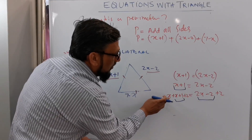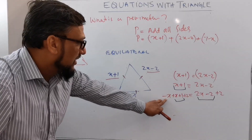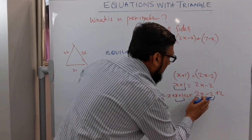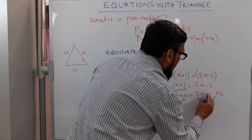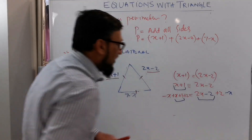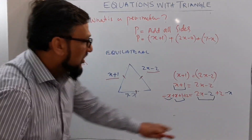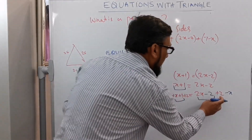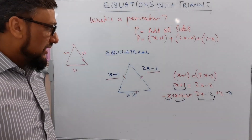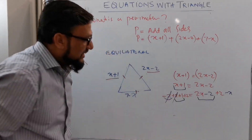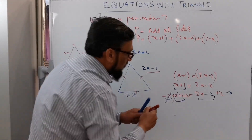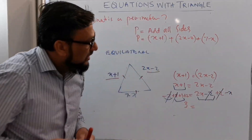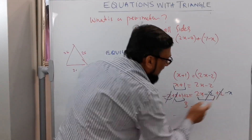Cancelling this x by putting minus x here, and I need to do minus x on the right side as well. Then this minus 2, so I'm doing plus 2 here and plus 2 on the left as well. This minus x and this plus x cancel, and 1 plus 2 is 3.